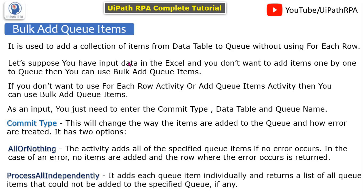The second option is Process All Independently. It adds each queue item individually and returns a list of all queue items that could not be added to the specified queue. If you select this option, it will add each item individually and return as output whichever items were not added to the queue.